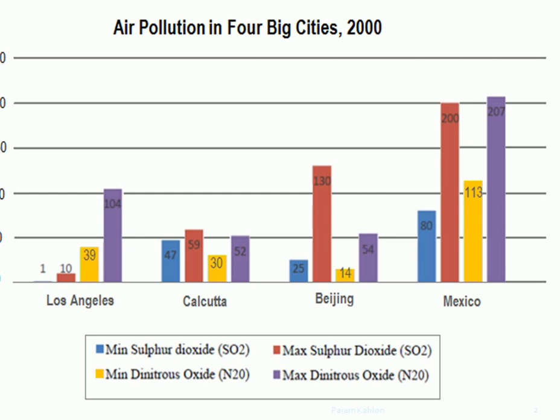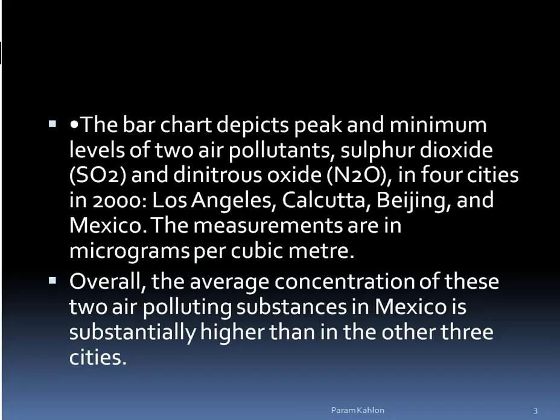The chart provides the year 2000 values for 4 major cities in different nations: Los Angeles, Beijing, Mexico, and Calcutta. There are two major pollutants shown — SO2 and N2O — with their minimum and maximum levels. The values are given in microgram form. The chart depicts the peak and minimum levels of these 2 air pollutants across the 4 different cities.